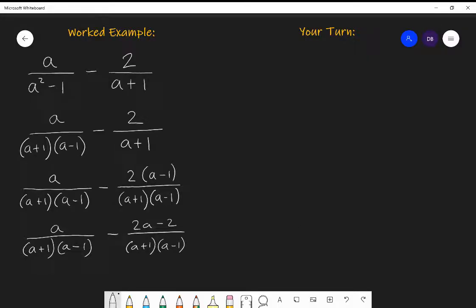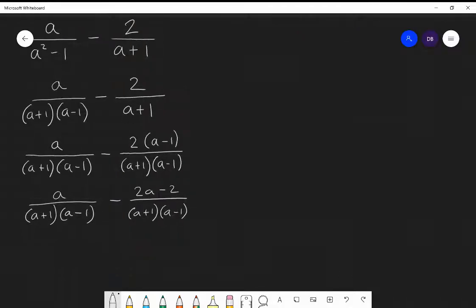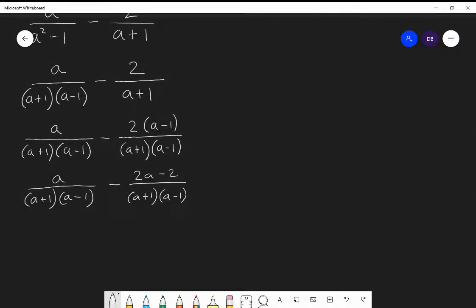Now a lot of A level students will go wrong at this point. When you do the next part, you're subtracting the two fractions. So you're going to subtract the numerator of the second one from the numerator of the first one. I have A and I'm going to subtract 2A minus two.